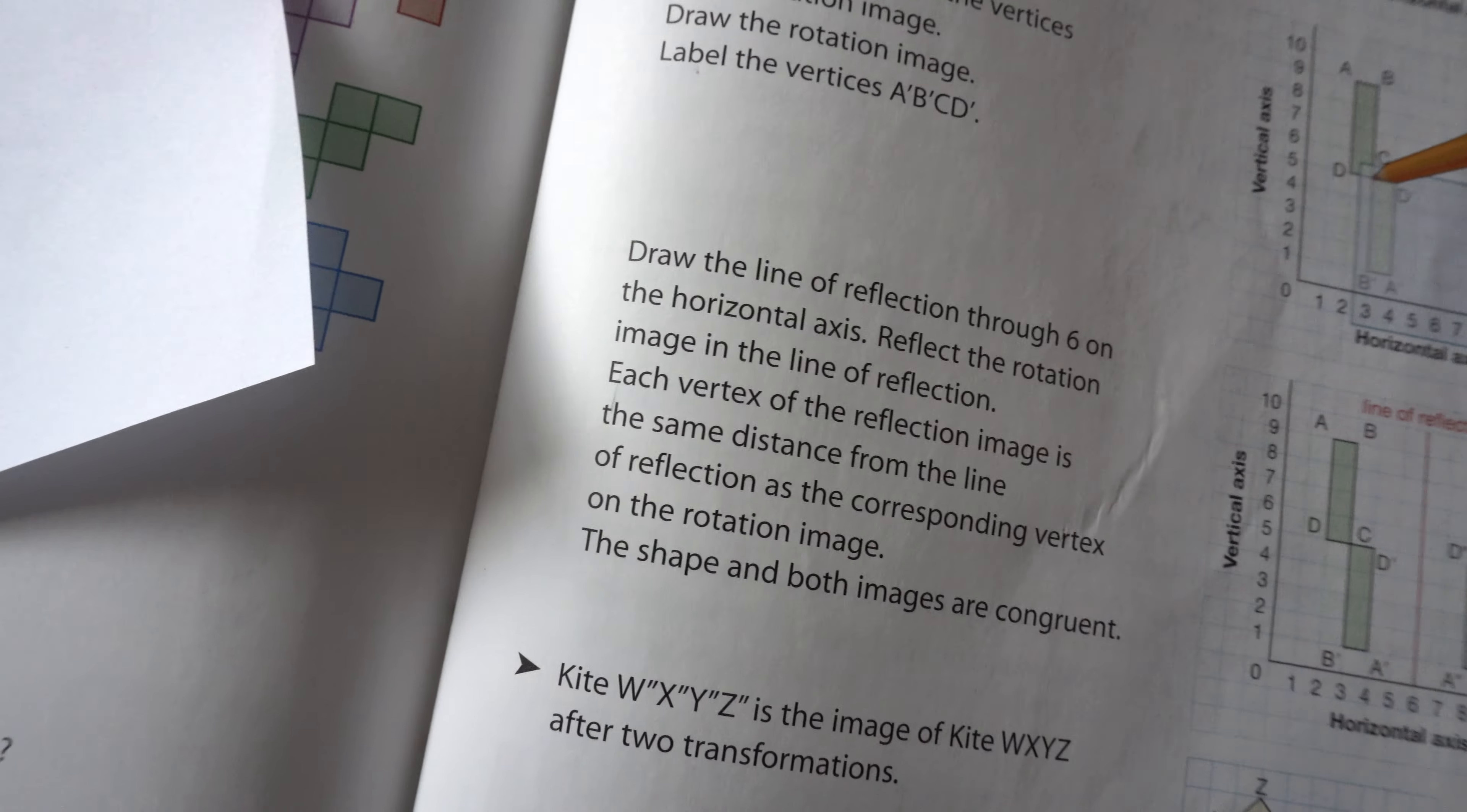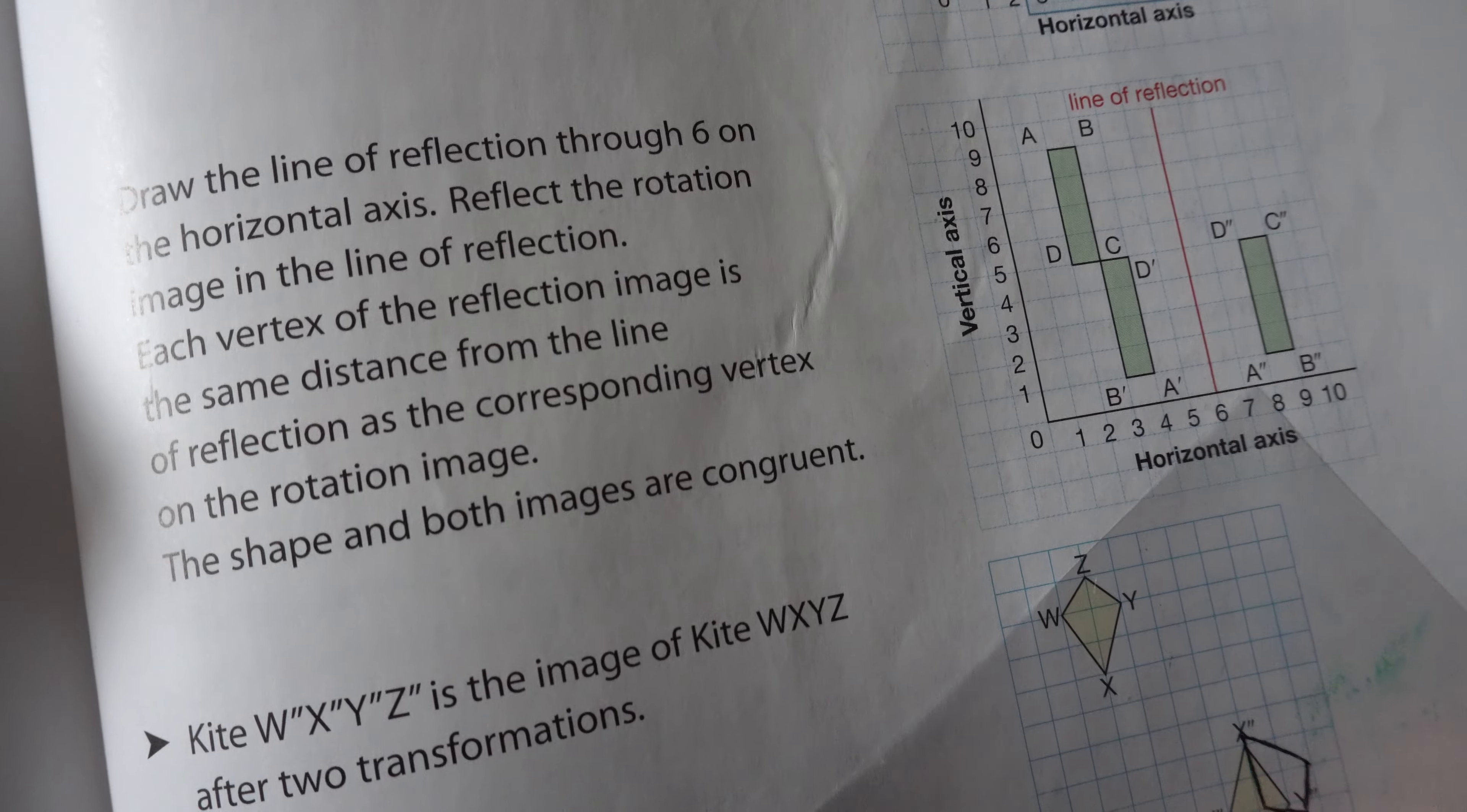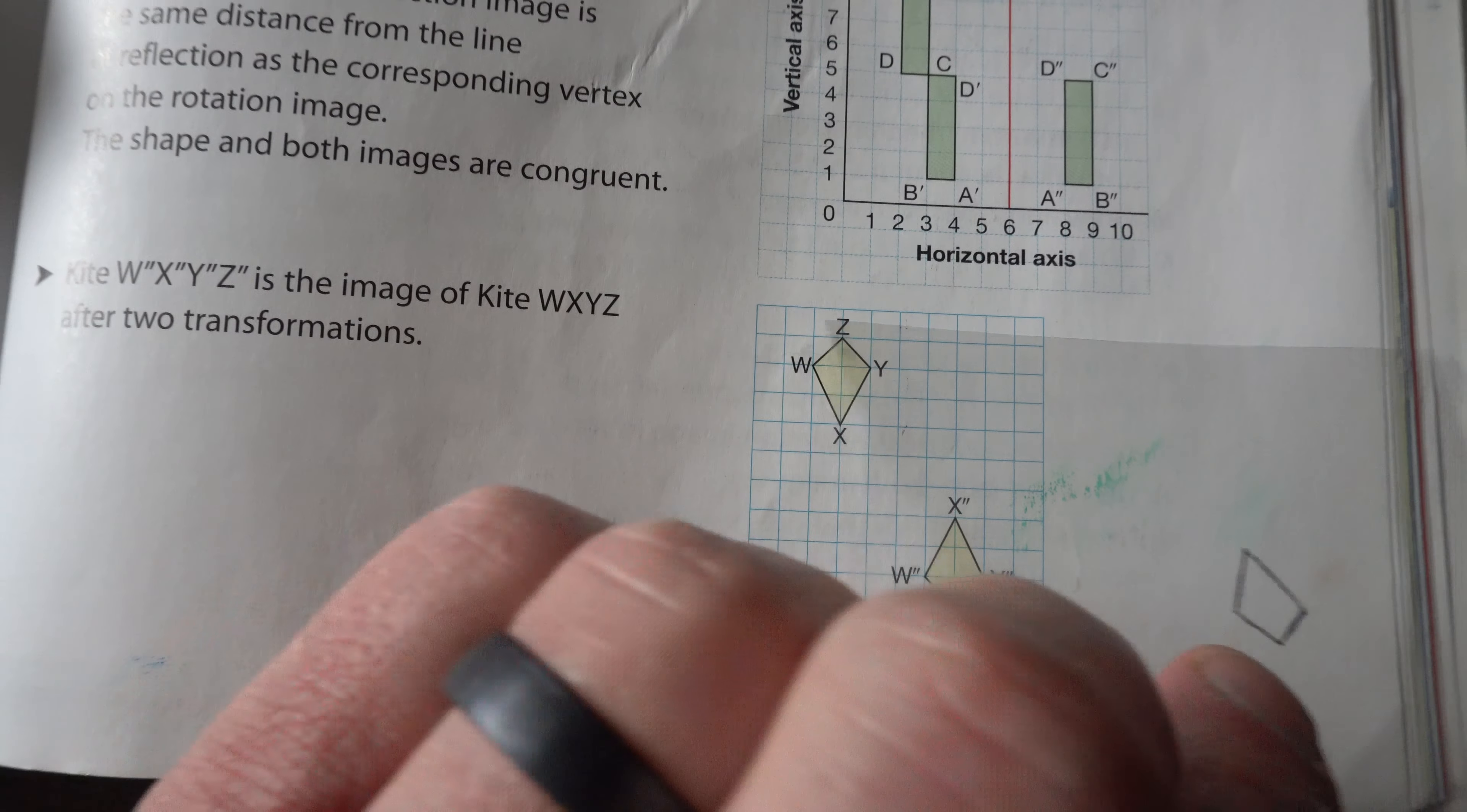Here's another example. We've got a kite. A very Charlie Brown-y looking kite. And we're going to go from here, some way over here. And you can see it's double prime. So it's two types of transformations happening. Turn the page.